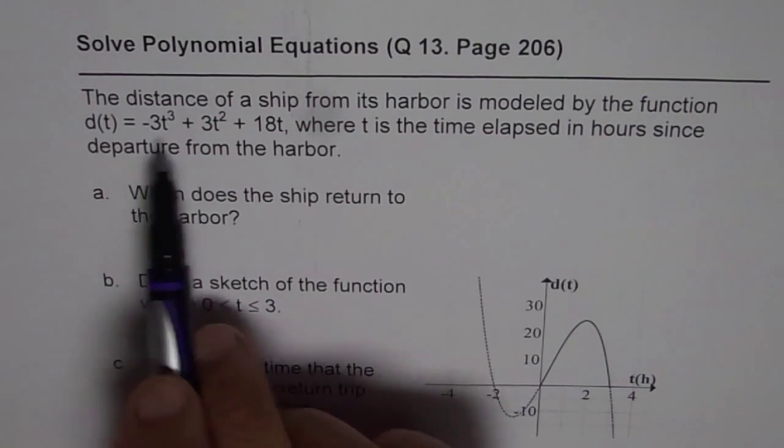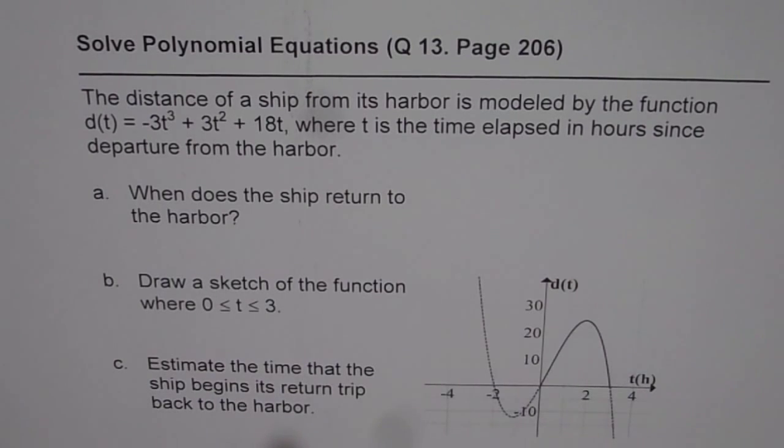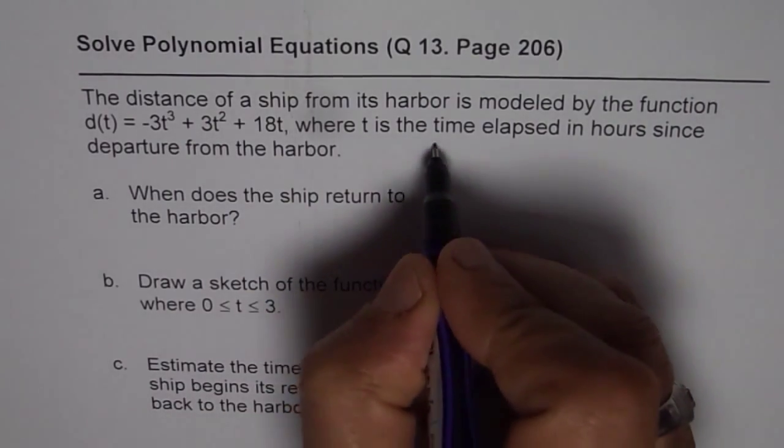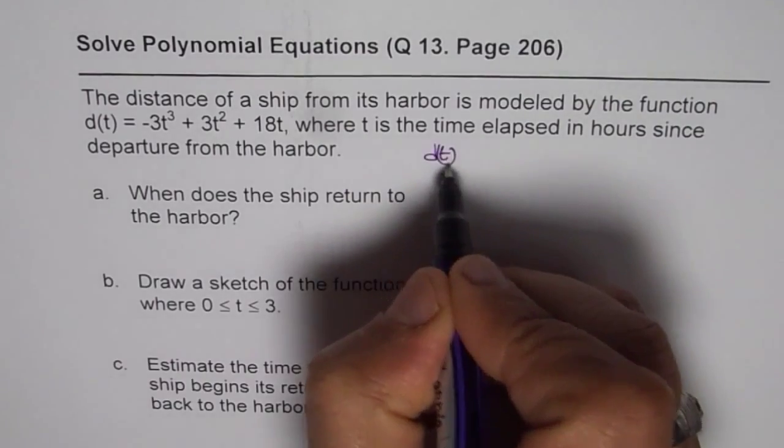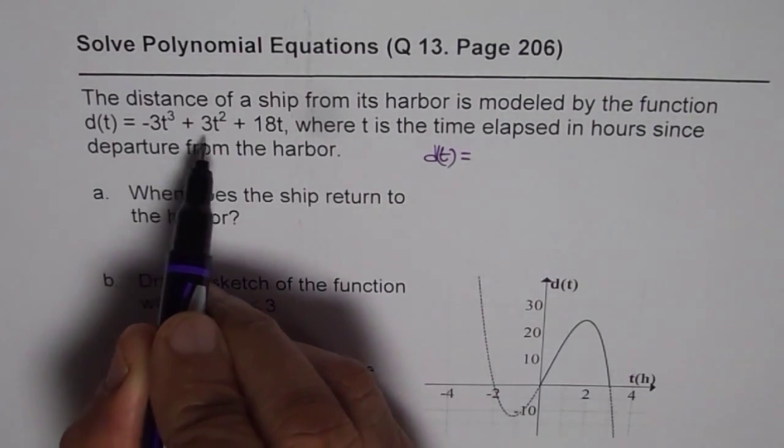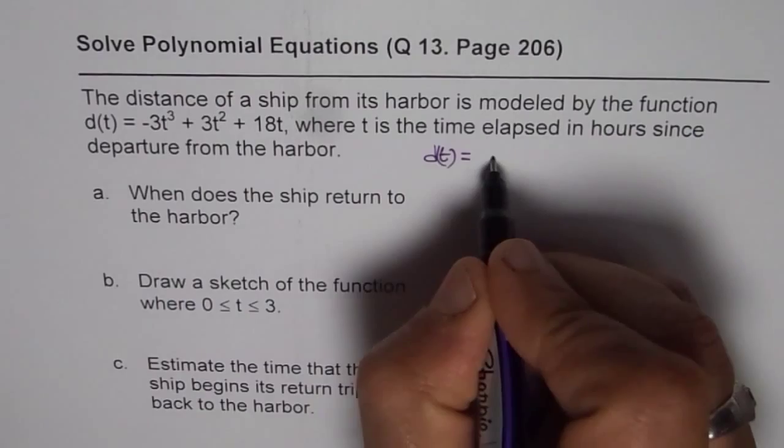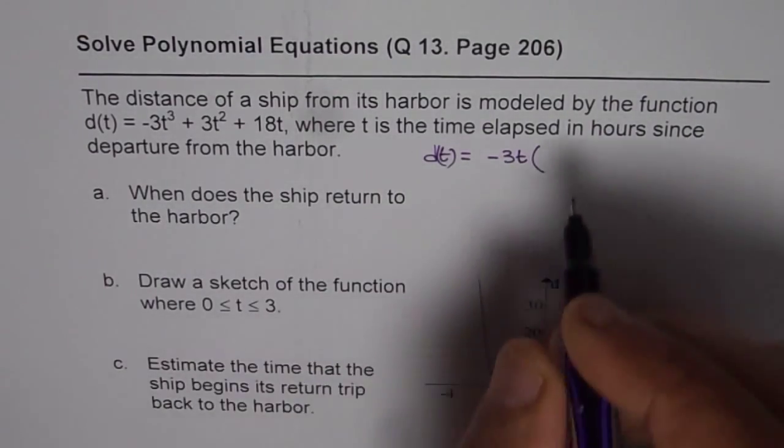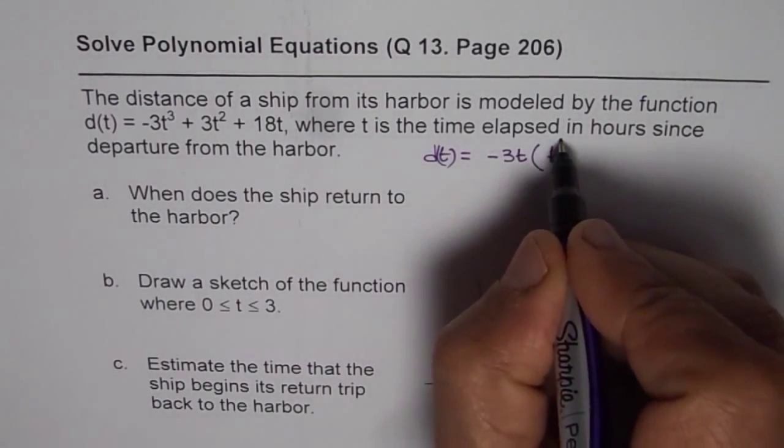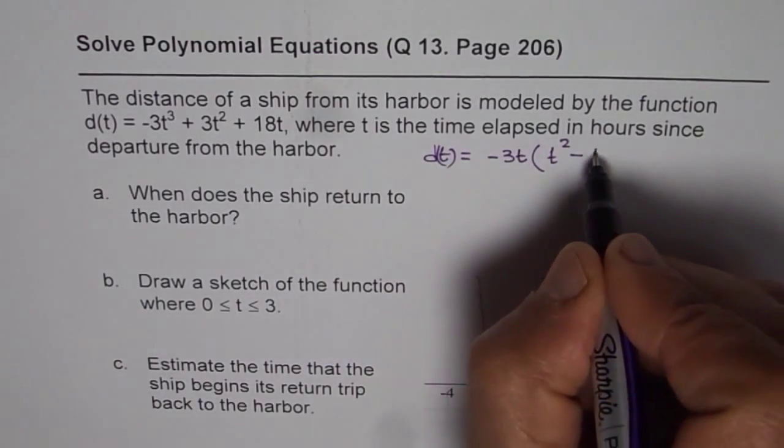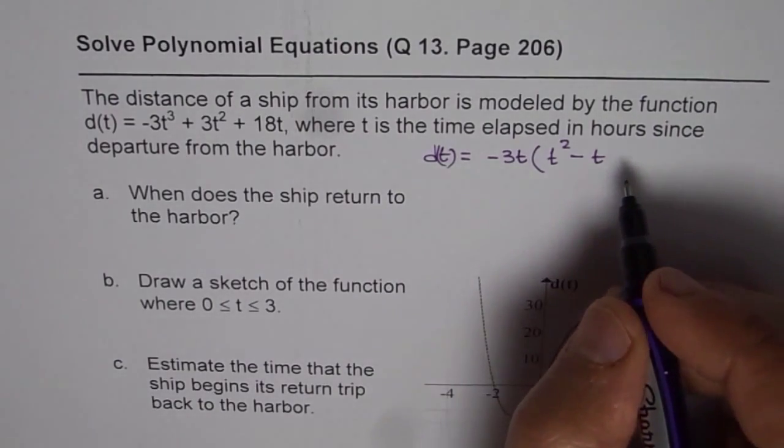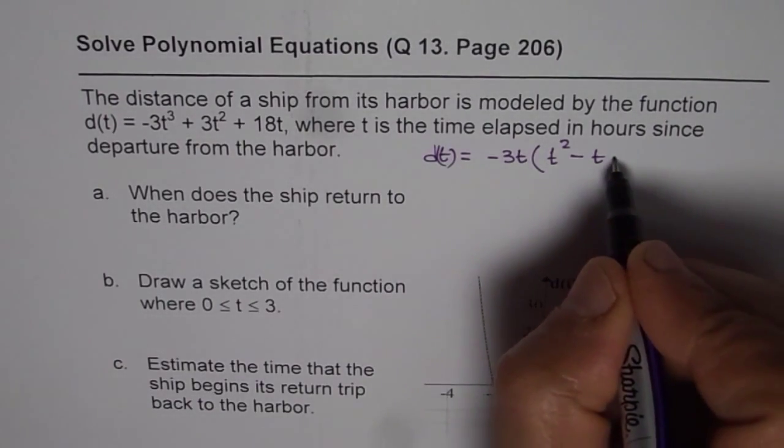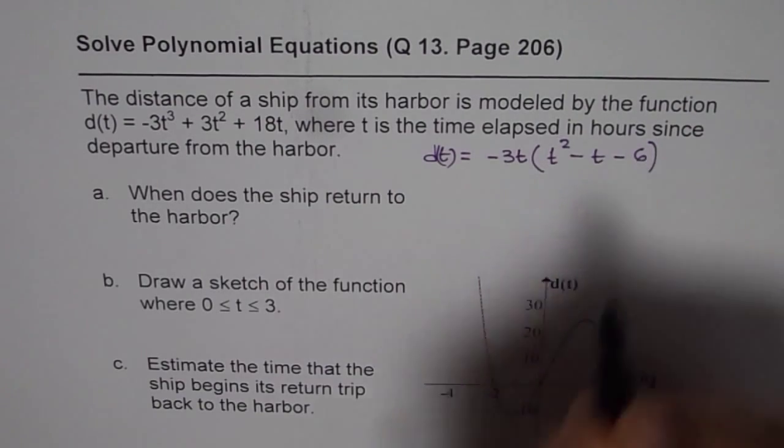Whenever you are given a polynomial function, it is a good practice to factor it. We will write d(t) as equal to minus 3t as a common factor for the three terms. We are left with t squared minus t minus 6. This can be factored as minus 3t times (t minus 3) times (t plus 2).